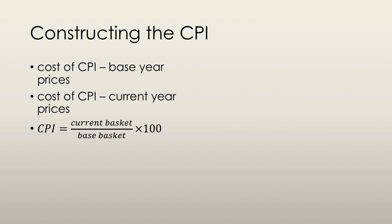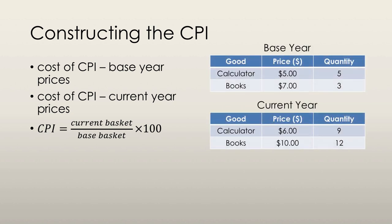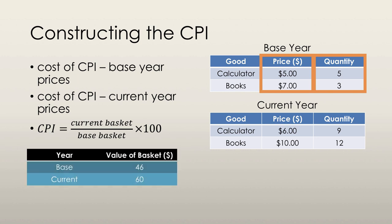Let's look at how we actually construct a CPI. We have a base year and a current year with two goods in each. The first thing we do is find the cost of the CPI basket in base year prices — we take the base year prices and multiply them by the quantities. So we have $5 per calculator multiplied by five calculators, and $7 per book multiplied by three books bought. In the base year, the value of the basket is $46.